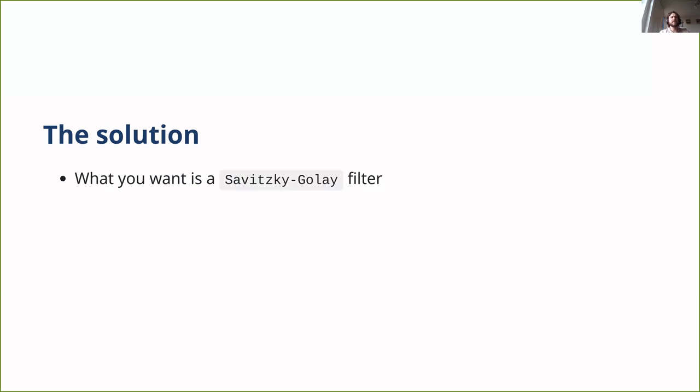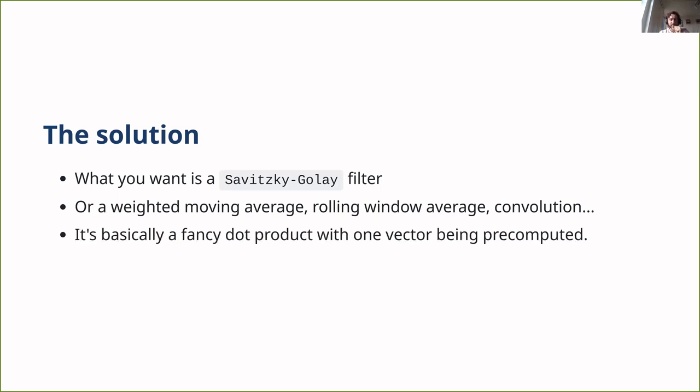So there's a name for this. It's called a Savitzky-Golay filter or a weighted moving average or a rolling window average or a convolution. There's a bunch of different names. But for our purposes, it's just a dot product with one vector being pre-computed. And the vector that's pre-computed is the one that we can do the compile time magic on.